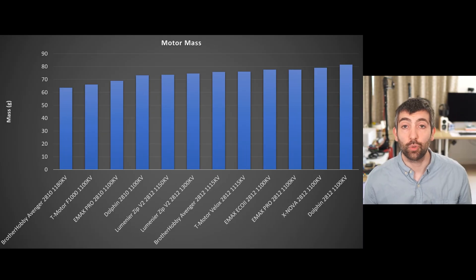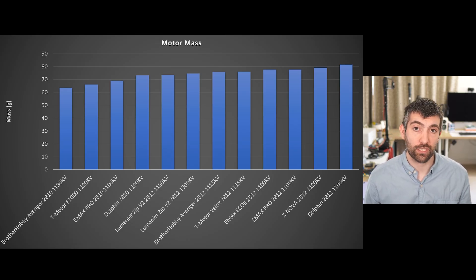When calculating the scores for these motor tests, I always take into account the motor mass because it's easy to make a motor that performs better by making it heavier. We can see that the Xnova 2812 and the Dolphin 2812 are the heaviest motors, and the 2810 size motors are all significantly lighter weight than most of the 2812s, with the exception being the Lumineer Zip V2 2812 which actually comes in very light for its size. So obviously taking into account the motor mass is important when calculating the scores. There's no use having a motor that performs really good if it weighs a ton because that is going to have a negative impact on the performance of the drone as well.